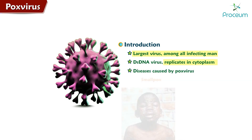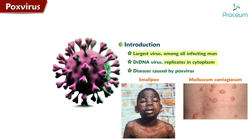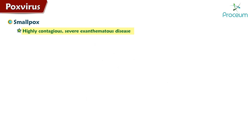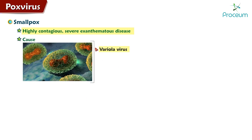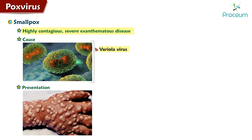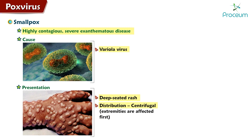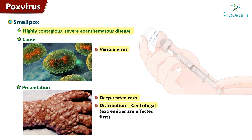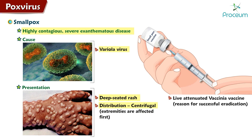Diseases caused by pox virus include smallpox and molluscum contagiosum. Smallpox is a highly contagious, severe exanthematous disease caused by the variola virus. It presents with rashes which are typically deep-seated and centrifugally distributed, and extremities are affected first. The introduction of the live attenuated vaccinia vaccine was one of the reasons for its successful eradication.